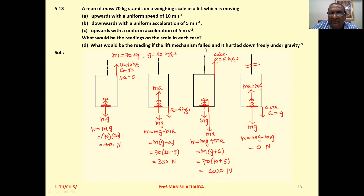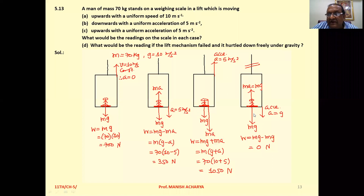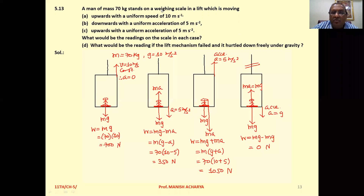Case D — the lift mechanism fails and it hurtles down freely under gravity. Weight of the person mg acts downward, but the lift now accelerates downward at a = g. The same acceleration g is imparted on the person in the upward direction as a pseudo force, giving upward force = ma = mg. Since mg downward and mg upward are equal and opposite, net force = zero. The weighing scale reads zero — the person experiences a weightless condition.